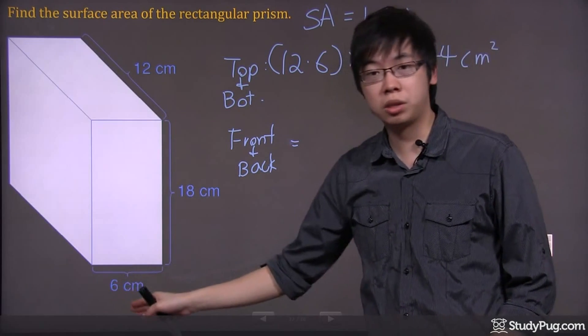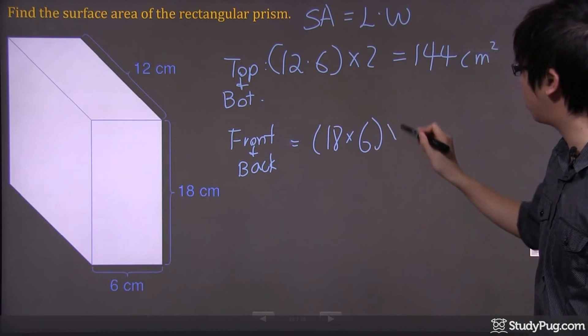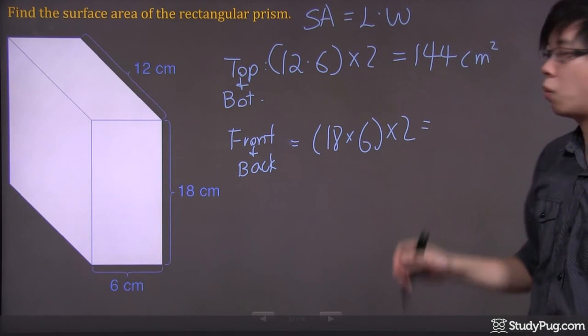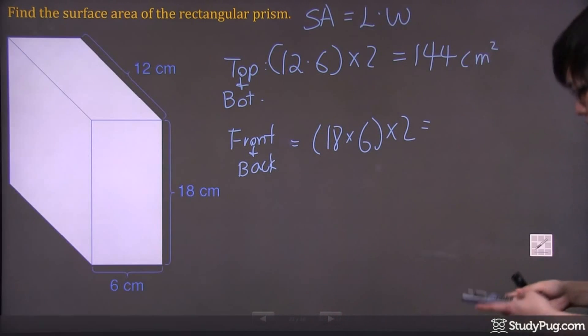We've got 18 times 6 over here. We get the length, 18, times 6, and we're going to multiply by 2. Once again, because there's a front and the back - identical pieces. So we've got 18 times 6 times 2, which gives us 216 centimeters squared.